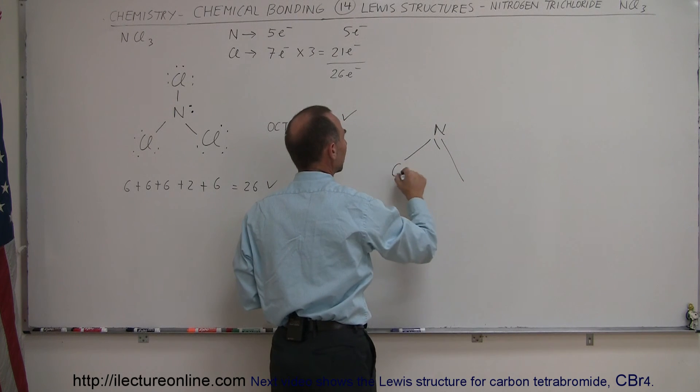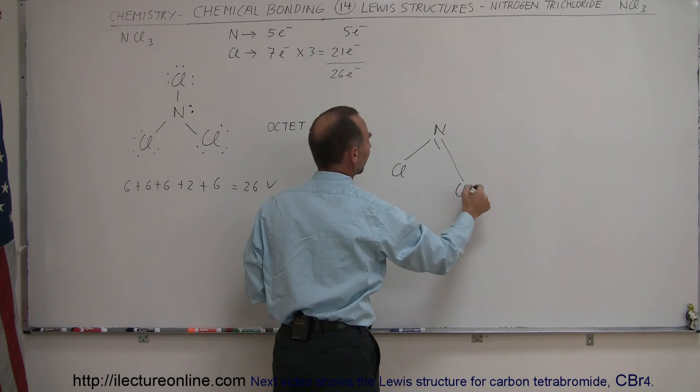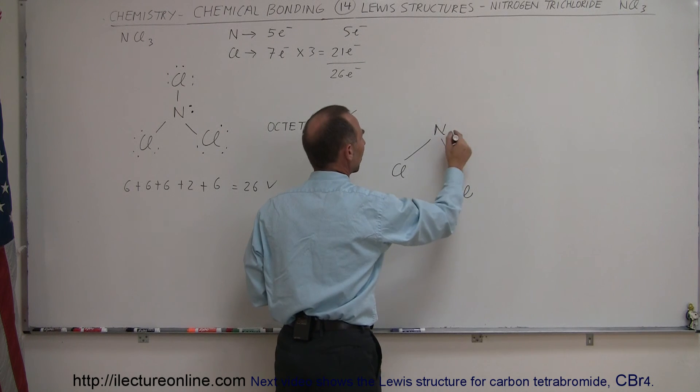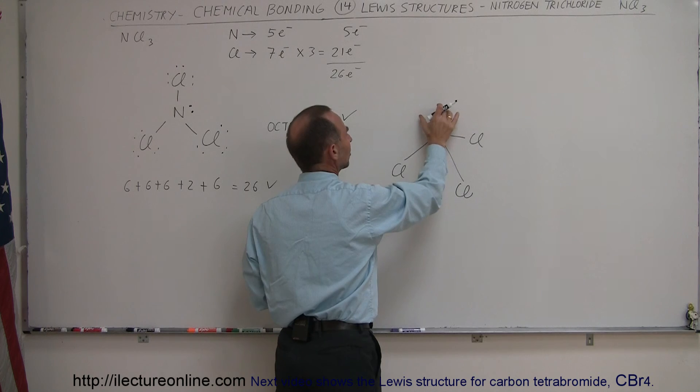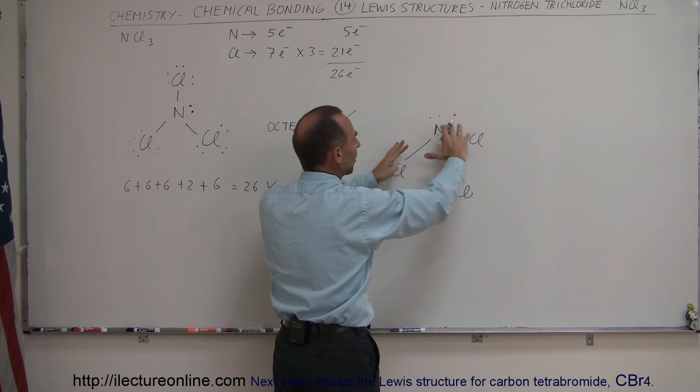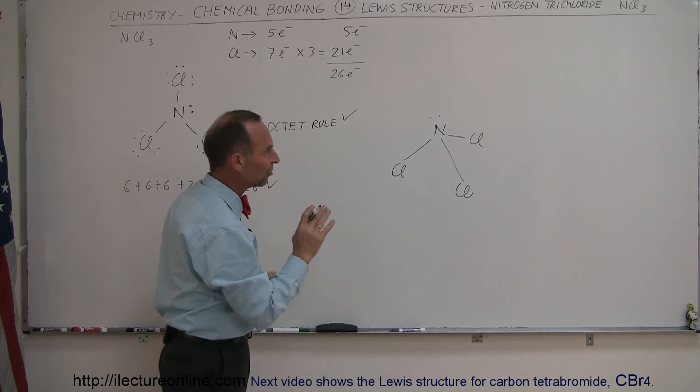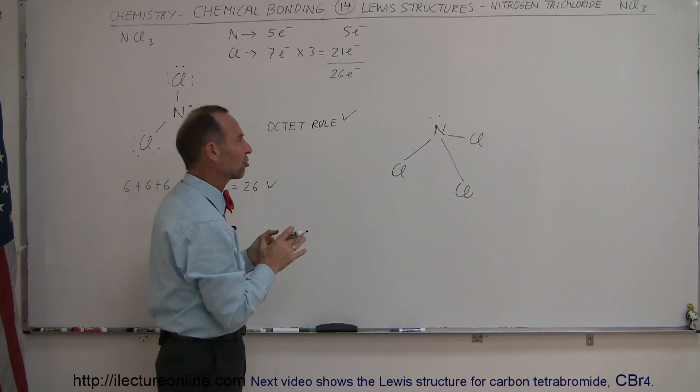So notice that there will be chlorine on this side, chlorine on the front, and then chlorine, maybe I should draw it like this, in the back like that, with the nitrogen and the two electrons, right, they're pushing the chlorines down, so we probably have a molecule that looks more like that, but that's not important right now as far as the Lewis structure.